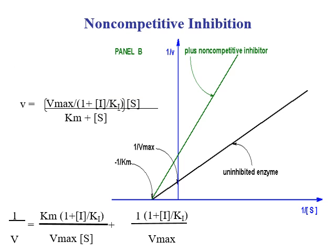Looking at the Michaelis-Menten model for non-competitive inhibition, you have to add the factor one plus concentration of inhibitor over Ki to the Vmax term, and there is the substrate concentration. When we take the double reciprocal, you get this kind of plot. Compared to competitive inhibition, the line with non-competitive inhibitor will intersect at a different point — the lines cross here on the plot. This is the model for non-competitive inhibitor.